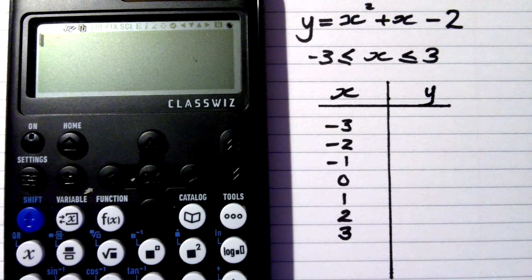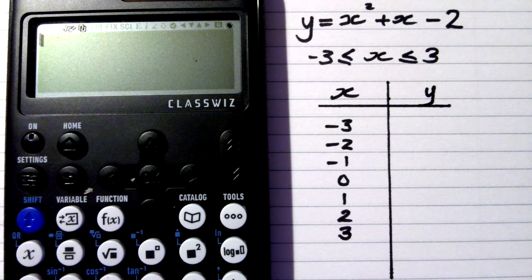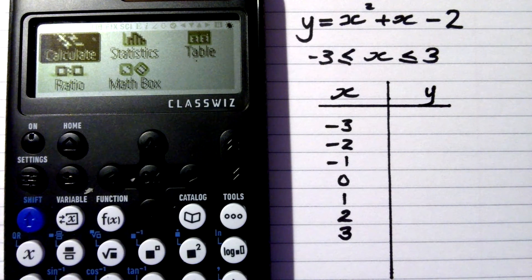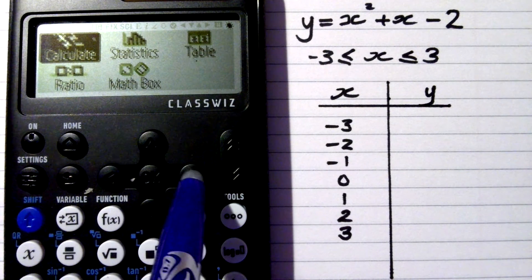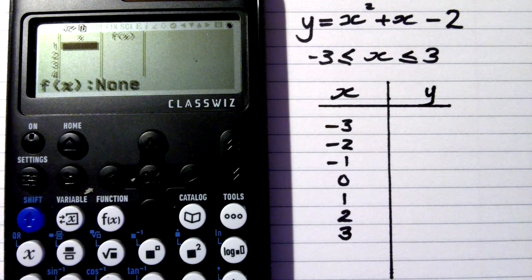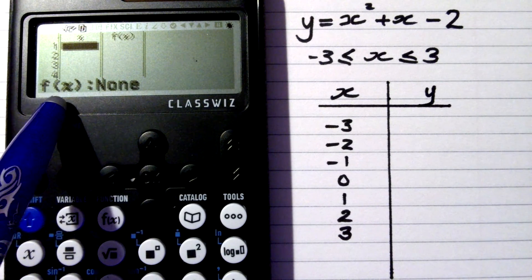The first thing to do is to set your calculator for tables. We have to press the home button, and that gives me the menu. Navigate to tables and press exe. Now I've got a blank table.